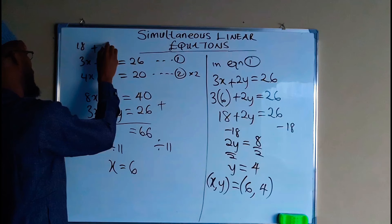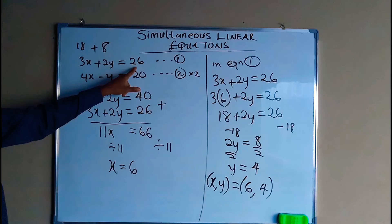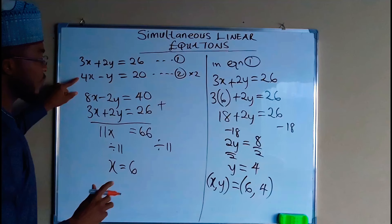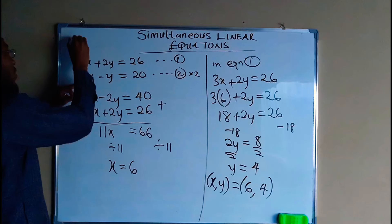So 18 plus 8 is definitely going to give us 26. And if you do the same thing to equation number 2, when x is equal to 6 we are going to have 4 times 6 which is equal to 24.